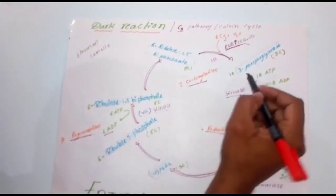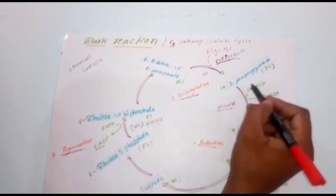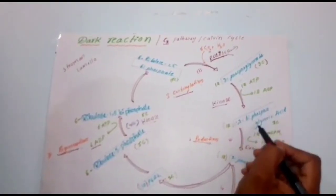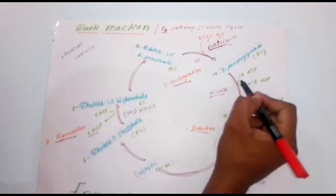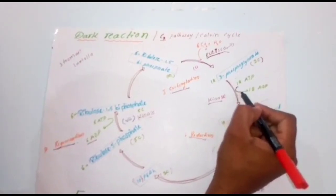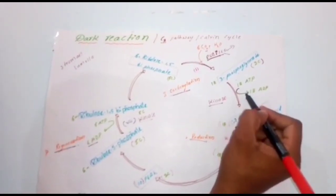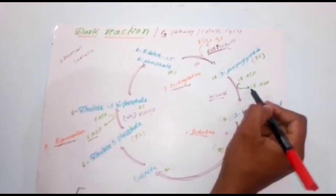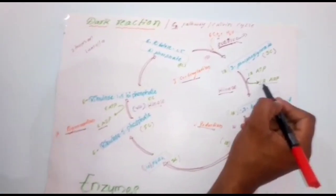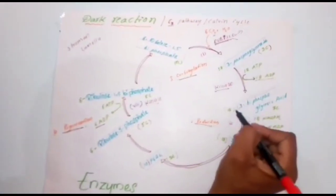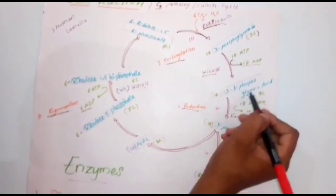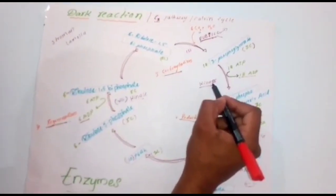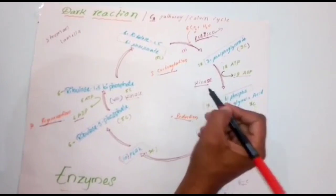The next step is: 3-phosphoglycerate is going to be converted into 1,3-bisphosphoglyceric acid with the help of 12 ATP molecules. 12 ATP molecules are going to be used in this process, and 12 ATP is converted into 12 ADP as phosphate is added to the phosphoglyceric acid. This conversion is possible with the help of kinase enzyme.